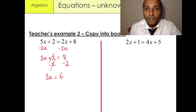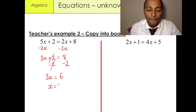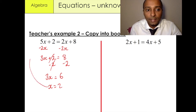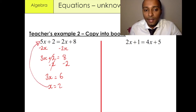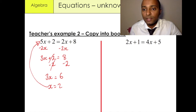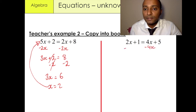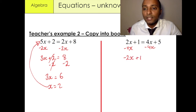What do you need to multiply 3 by to give us 6? x is equal to 2. You can check your answer by putting it back into the equation. Our next example is 2x plus 1 equals 4x plus 5. We're going to minus 4x from both sides, and what we have is minus 2x plus 1 equals 5.